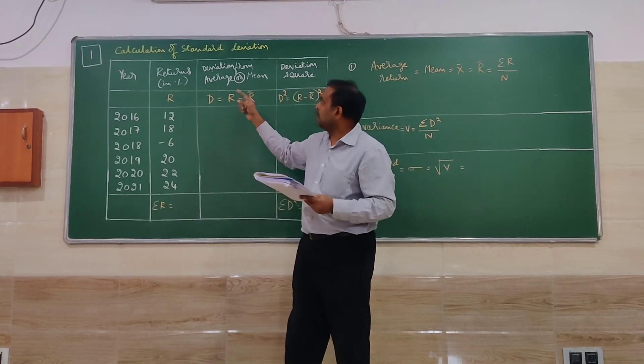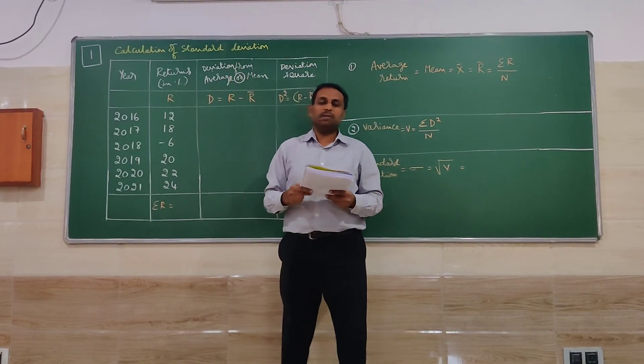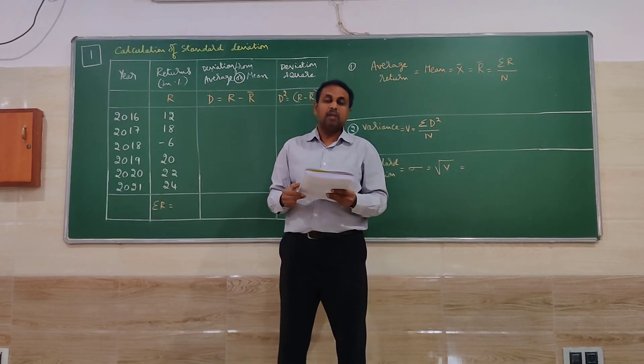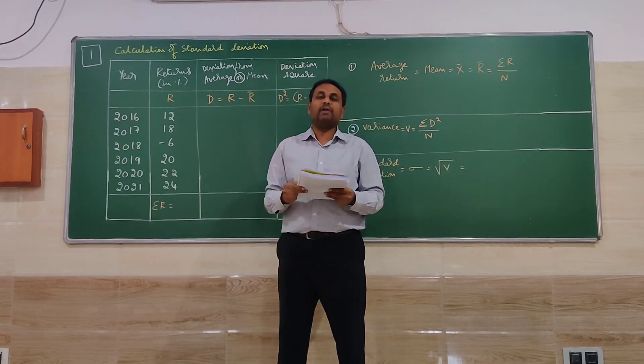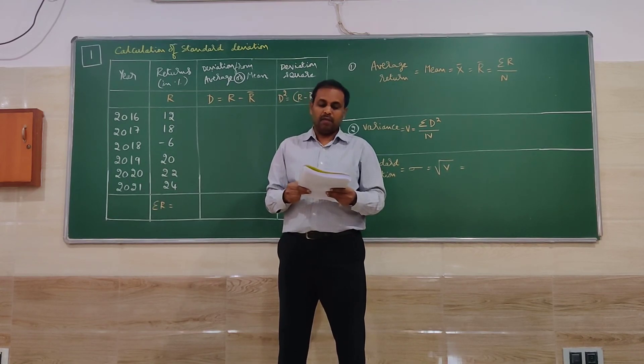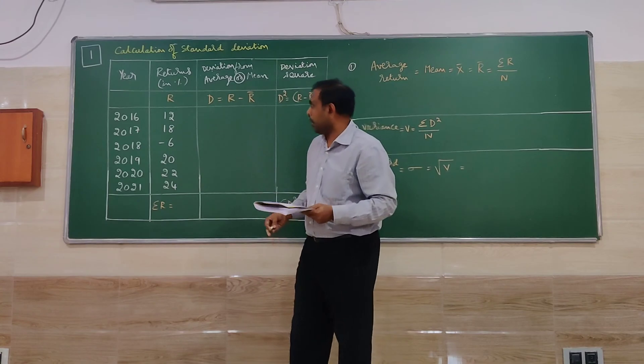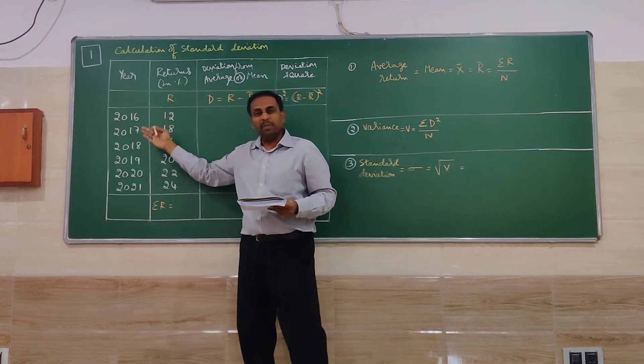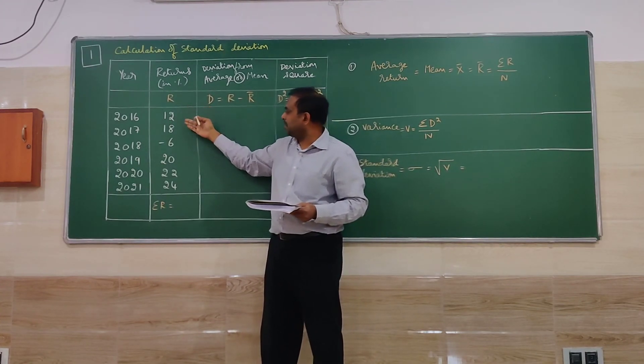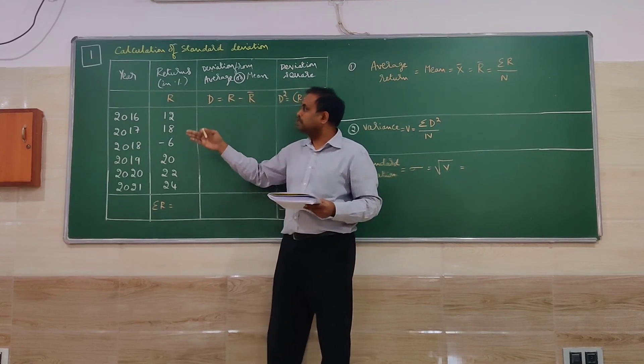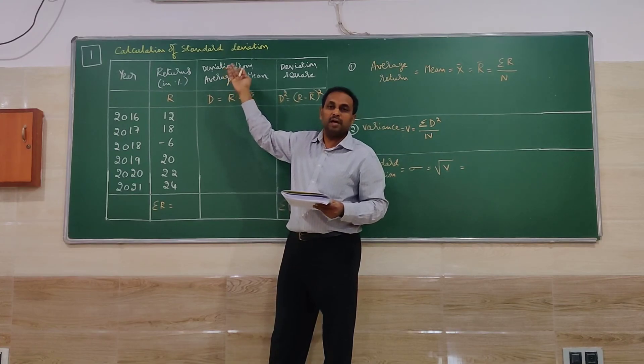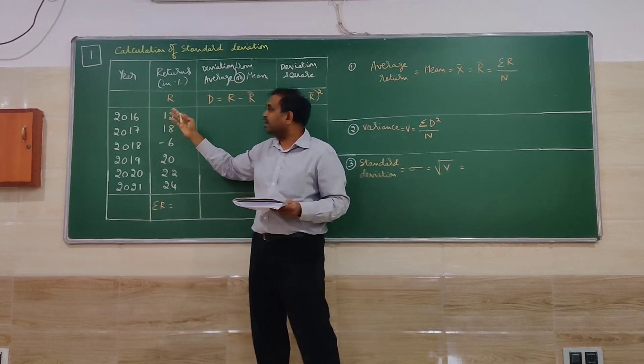Today we are working on calculation of standard deviation under the chapter investment management and security analysis. The problem goes like this: The rate of return of equity share of a company for last 6 years are given below. For 6 years information is available about the particular equity share. The returns are given for 6 years. Based on this we are supposed to calculate standard deviation, that is the risk connected to that particular equity share.